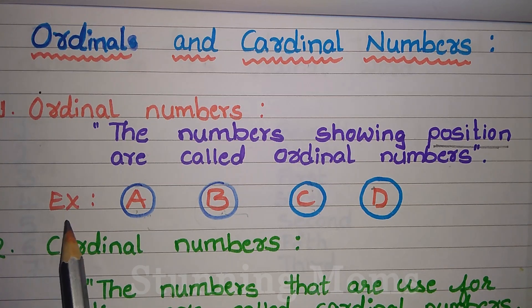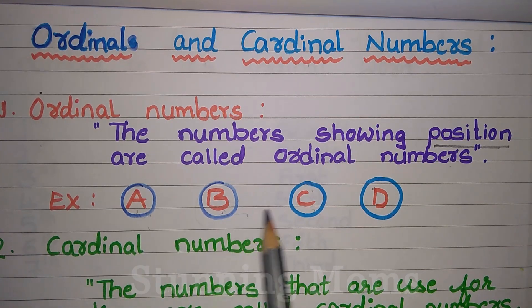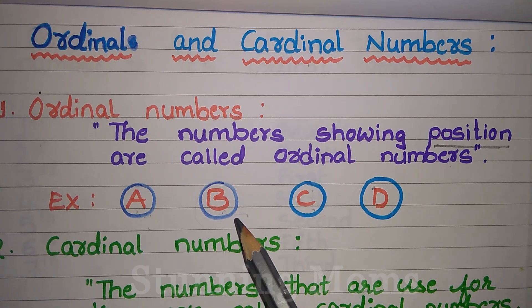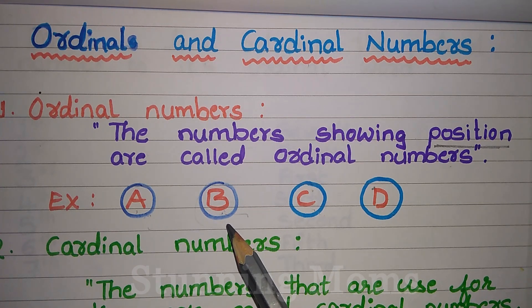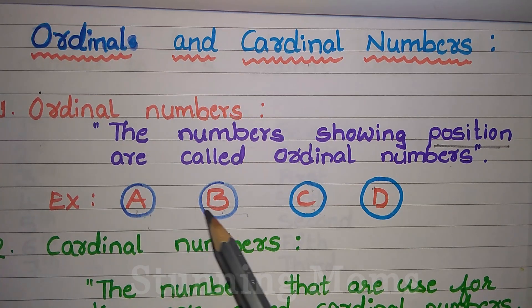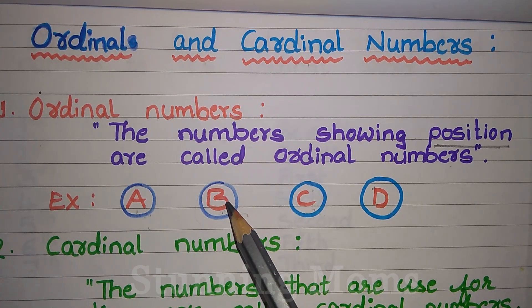I have taken the example of A, B, C, D. If I ask, B is in which position? Then the child will tell: this is the first position, this is the second position. So B is in the second position.